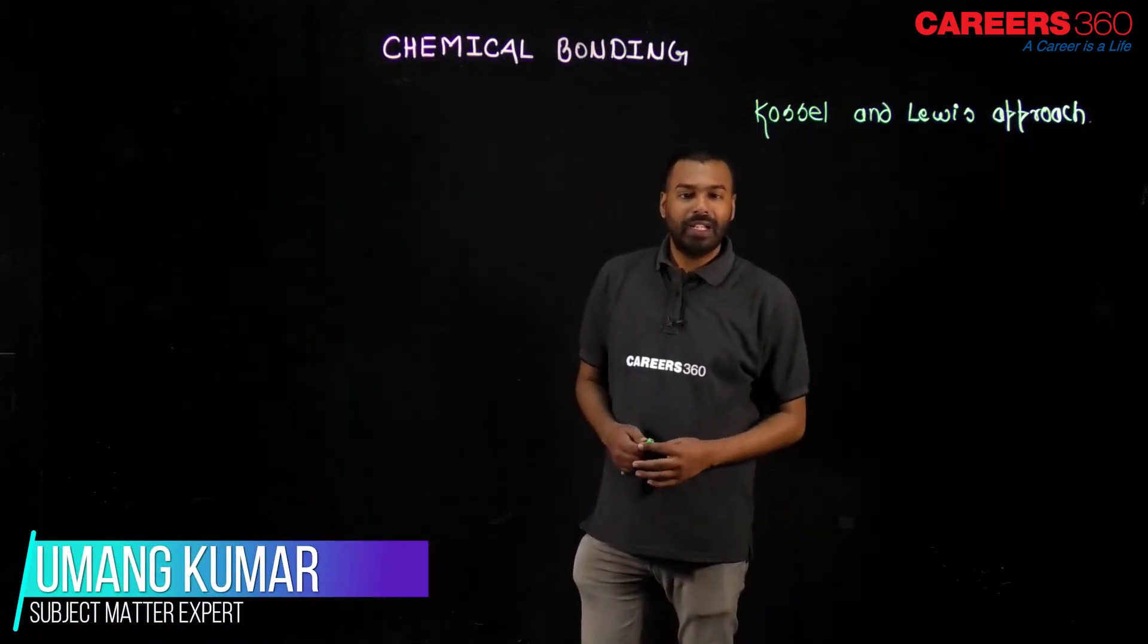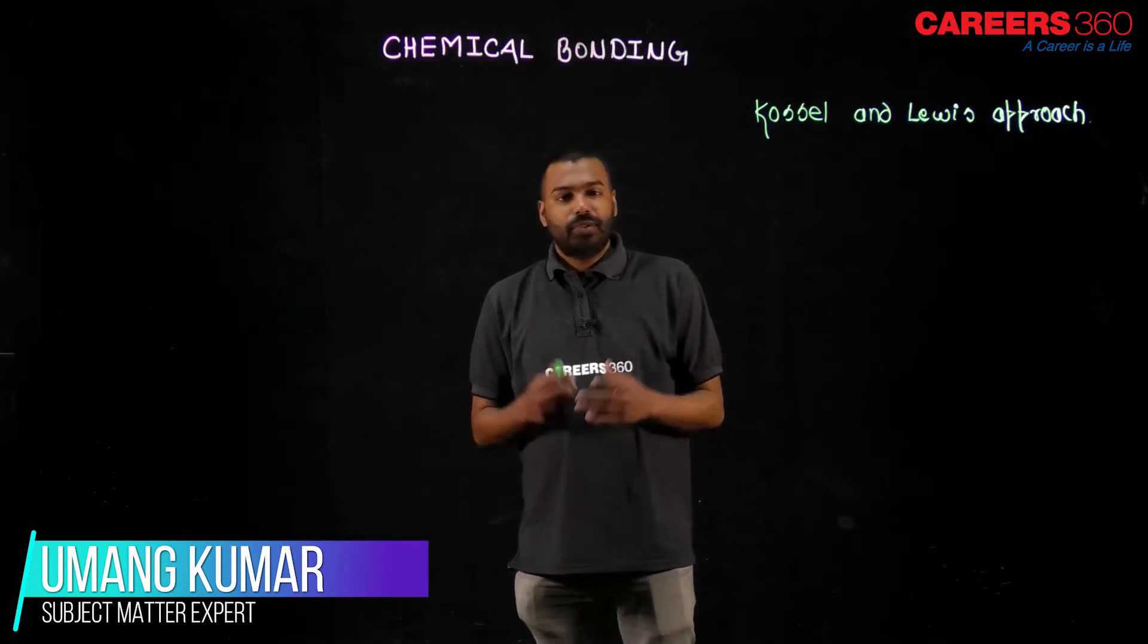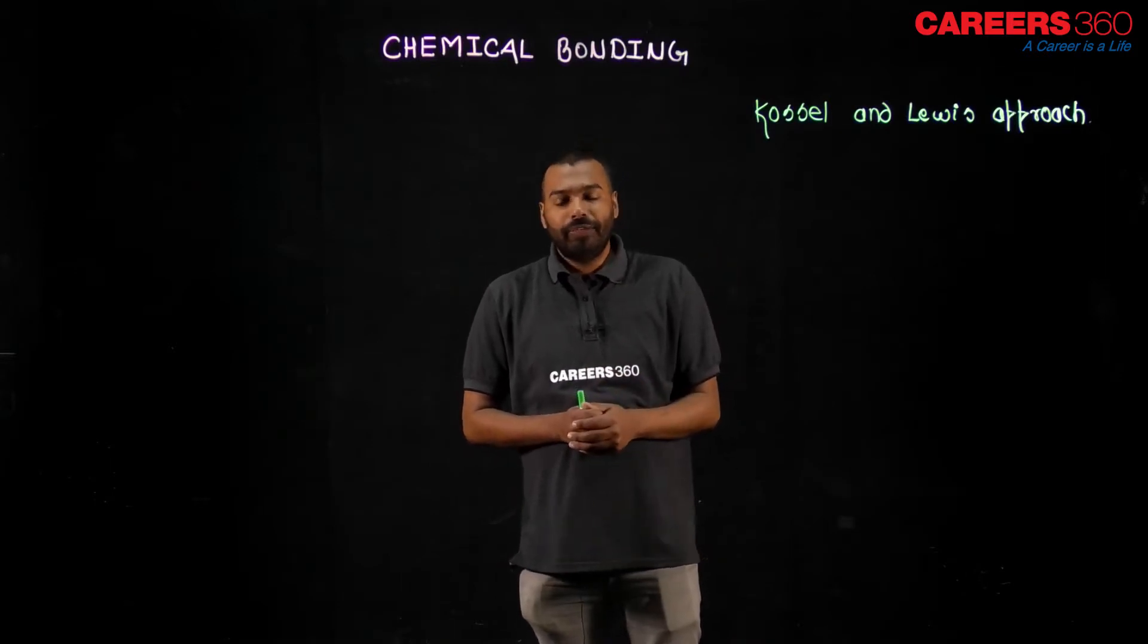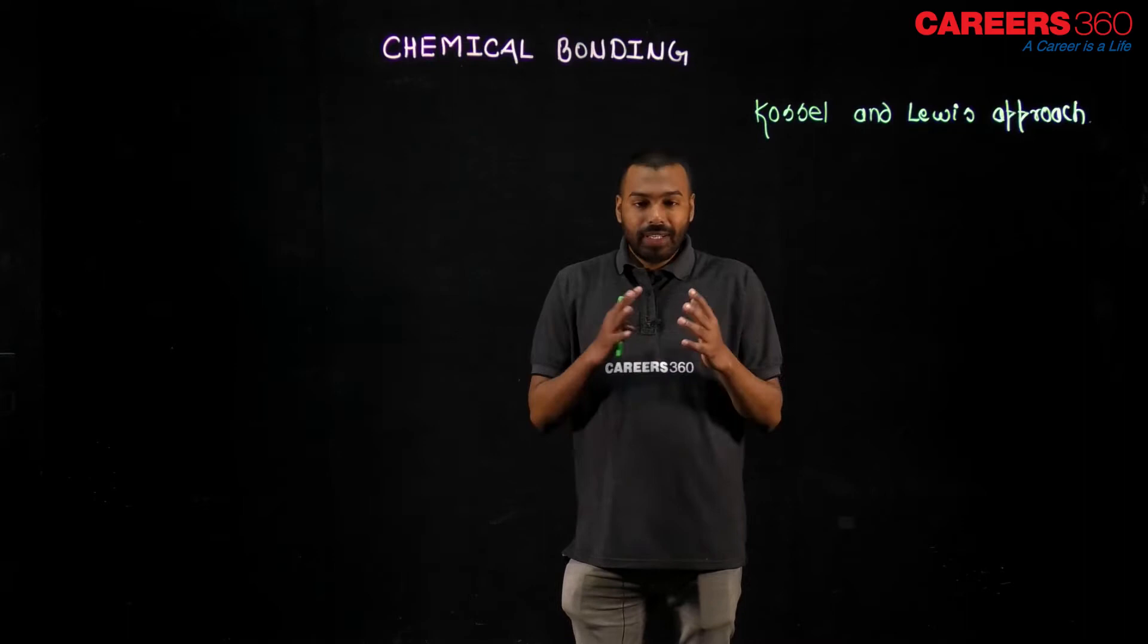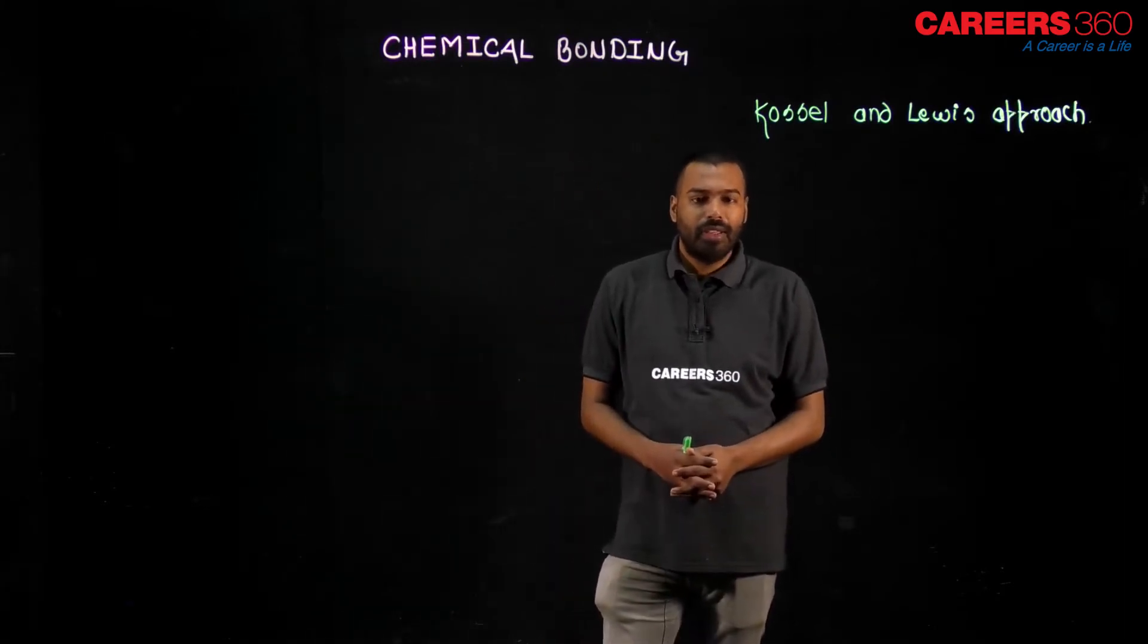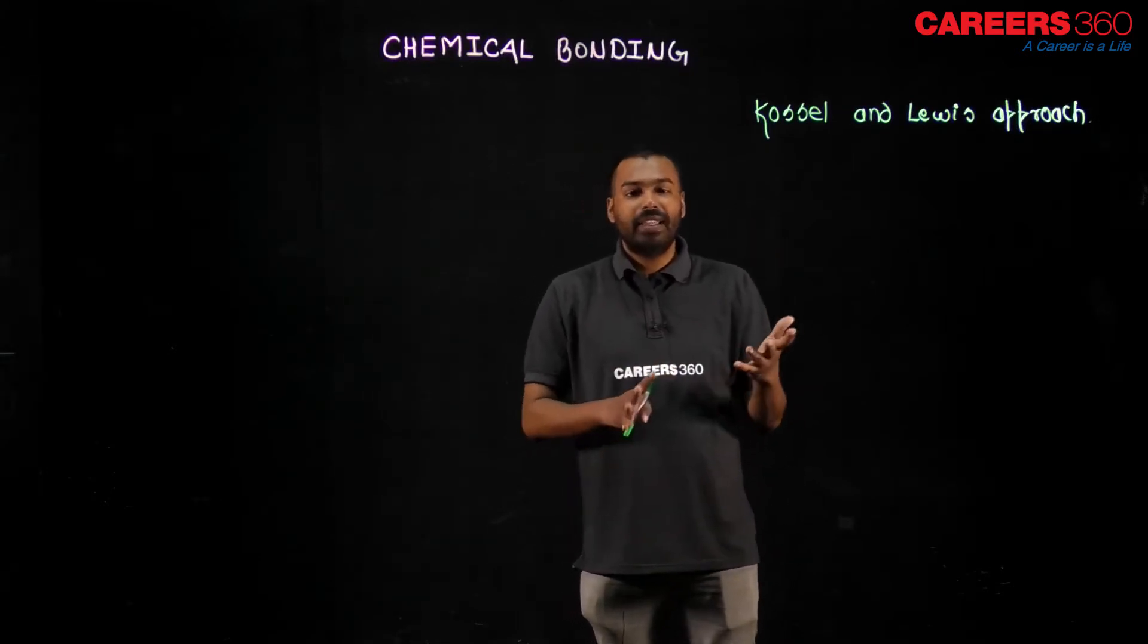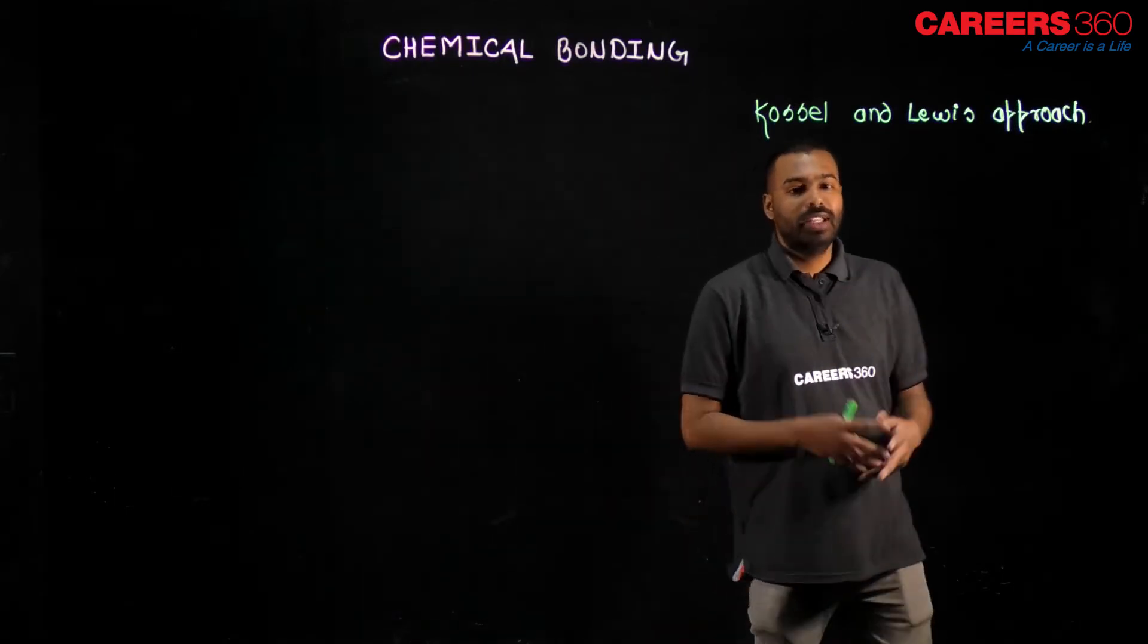Today's topic is about Kossel and Lewis approach. These two scientists Kossel and Lewis gave some ideas. They ignited the idea of chemical bonding. They made the idea of chemical bonding very easy. They made a systematic study of how atoms approach for chemical bonding and how valence shell electrons play an important role there. Let us see the important points of this theory now.